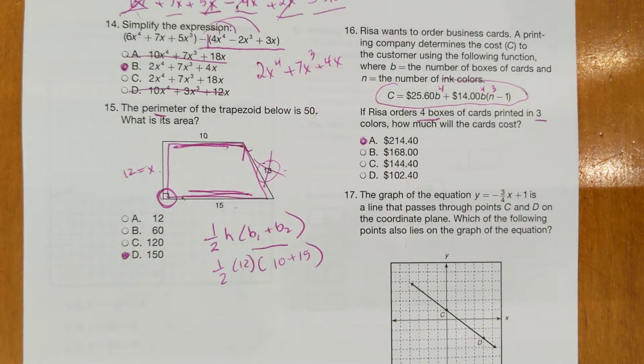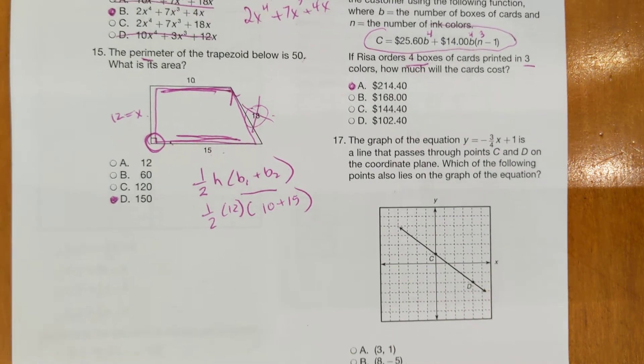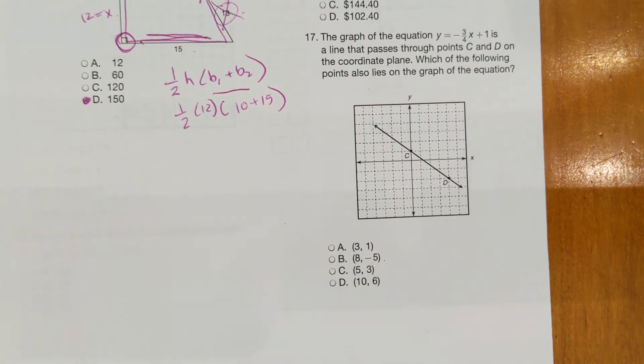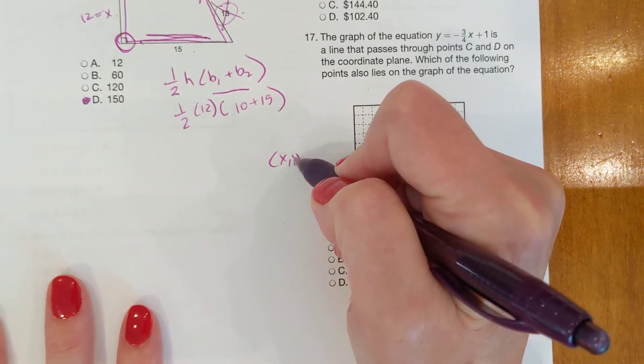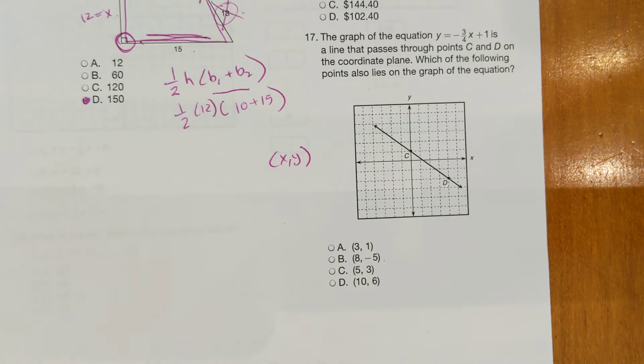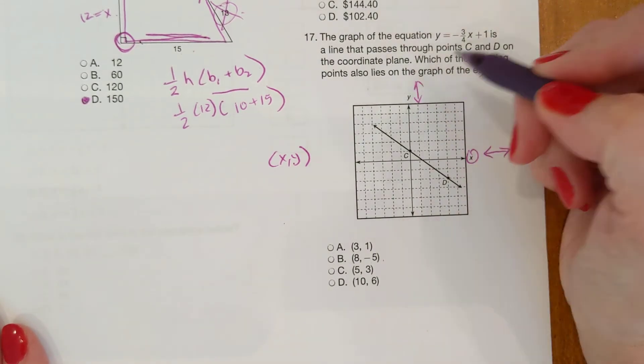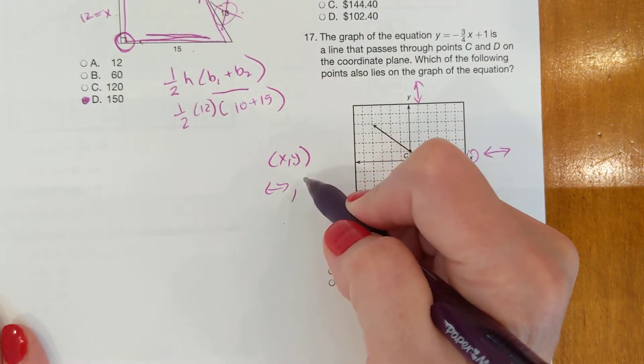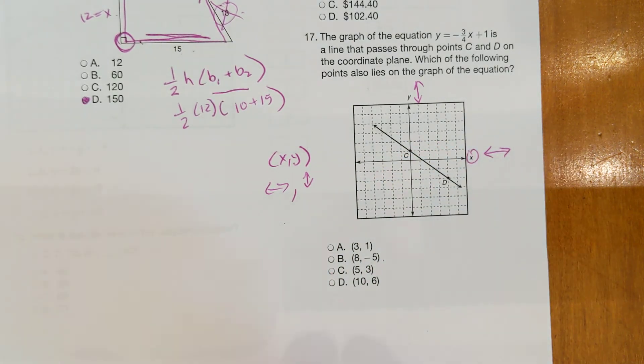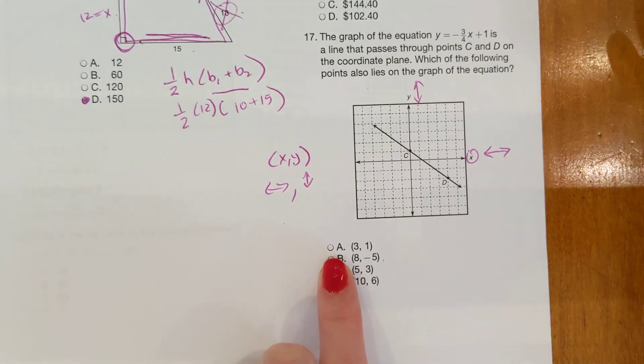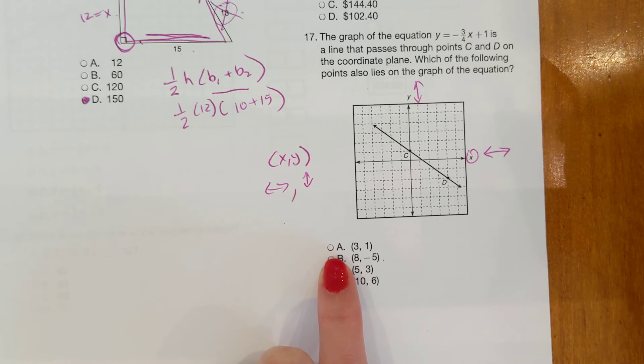Last one we're going to do in this part. Number 17 says the graph of the equation y equals negative three-fourths x plus one is a line that passes through points C and D on the coordinate plane. Which of the following points must also lie on the graph of the line? Okay. When you plot points, the first point is X and the second point is Y. It goes in alphabetical order. X, Y, Z. The X axis, as the picture shows, goes left and right. The Y axis goes up and down. So you're going to go left and right first and then you're going to go up and down. And you do this from the point zero. So from zero, what you're going to want to do here is just guess at it. Plot the points, see which one makes sense would still be on the line.